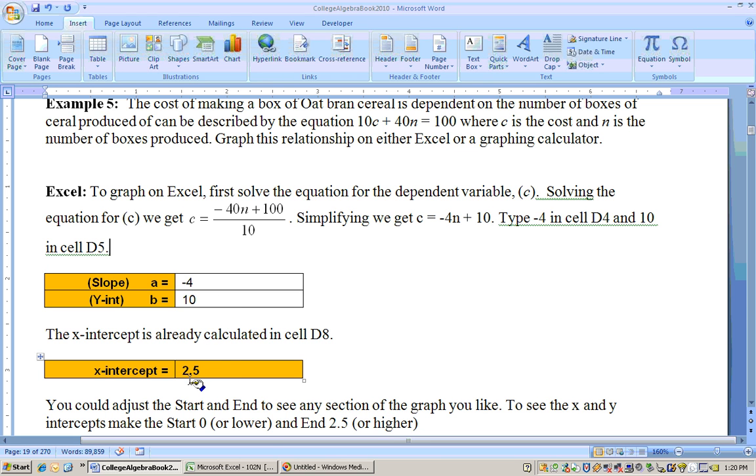And then the X intercept is 2.50. That means if you make 2.5 boxes, the cost would be 0. Maybe both of those really don't make sense with this particular problem, but that's what they're telling you. This model is telling you this.